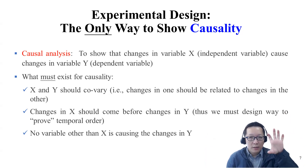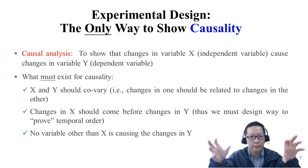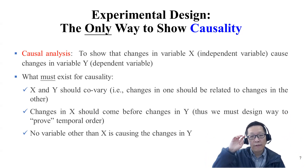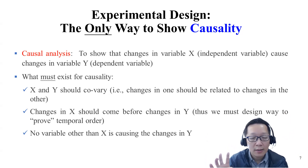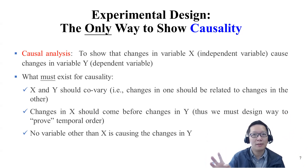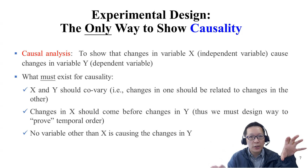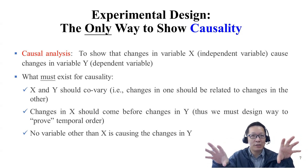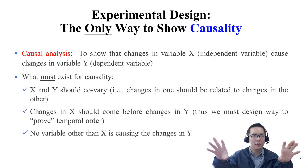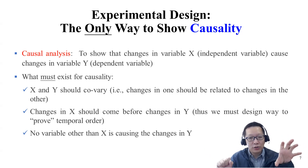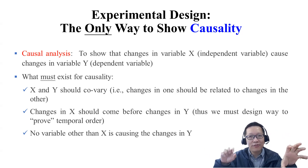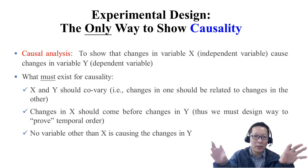The second condition is that changes in X must happen before changes in Y. For example, if you want to know whether a four-days-per-week work policy makes workers more productive, the four-day work policy must be implemented first, and then you measure the changes in productivity before and after. The changes in the intervention or changes in X must happen before Y — this is the temporal order. You cannot do it the other way around.